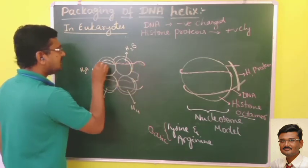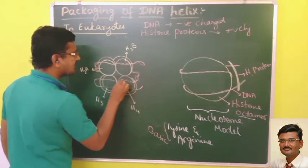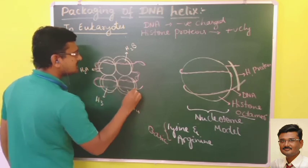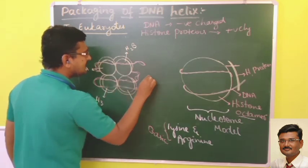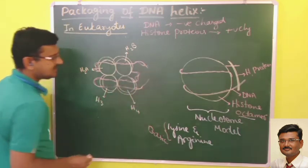Because of this positive charge on histones, the DNA — which is negatively charged — coils surrounding the histone octamer.